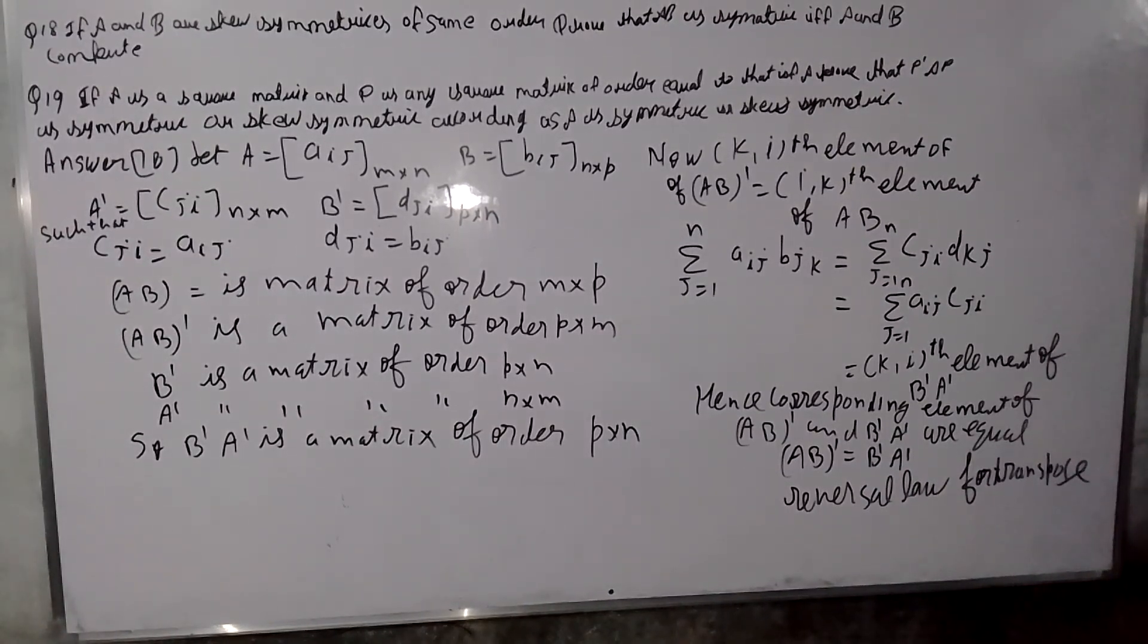Question number 18. If A and B are skew symmetric matrices of same order, prove that AB is symmetric if A and B commute.